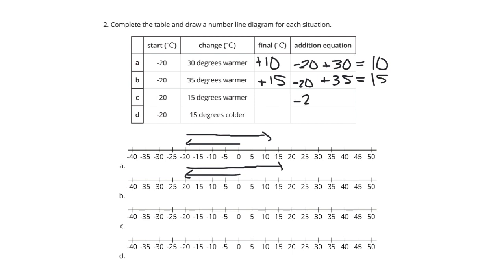What about starting at negative 20 but only going warmer by 15 degrees? Going to negative 20, getting warmer by 15. If you just count these, 5, 10, 15, that ends up at negative 5. So, negative 20 plus 15 is negative 5.